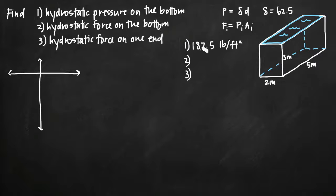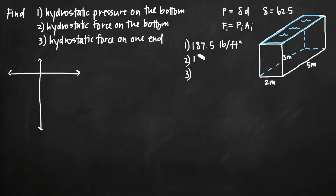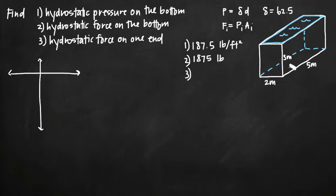The pressure on the bottom is 187.5. The area of the bottom is 2 times 5, which is 10. So 10 times 187.5 gives us 1875 pounds. That's the hydrostatic force on the bottom of the tank.